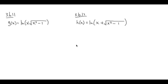We are going to take a look at number 11 and number 12 together, because these two questions look very similar, yet they are totally different. For number 11, we have ln of x times square root of x squared minus 1, while for number 12, we have ln of x plus square root of x squared minus 1. Notice the difference between 11 and 12.